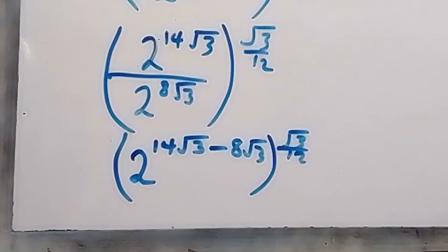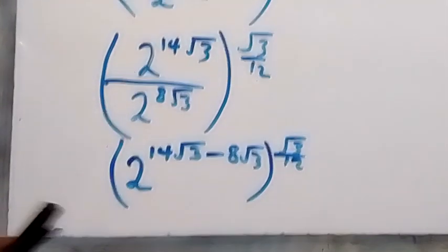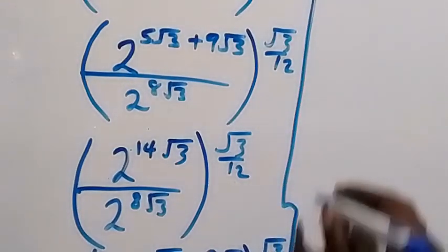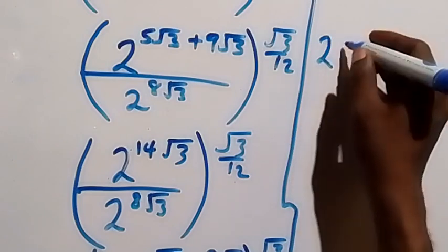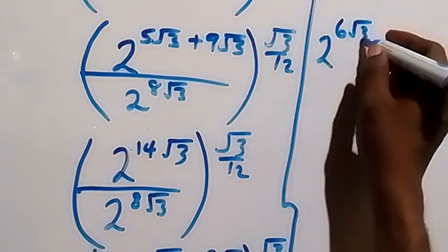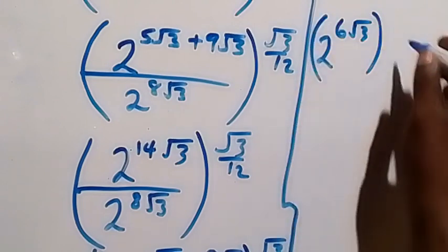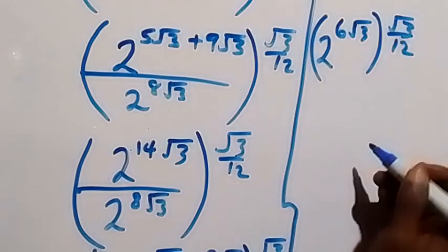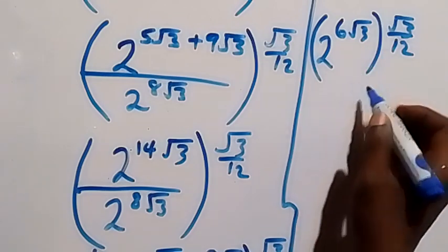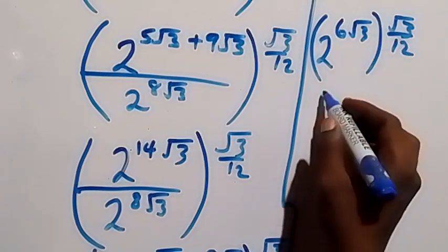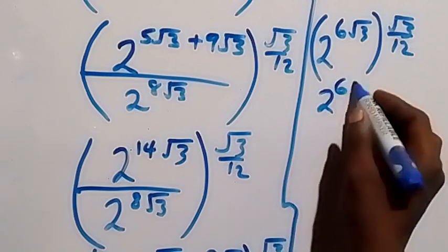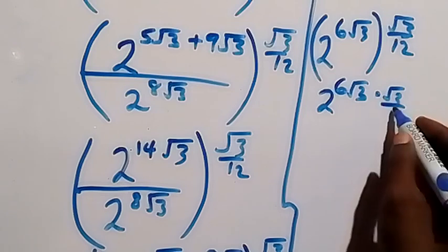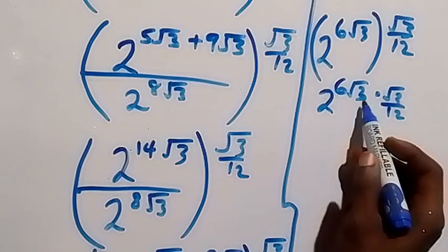So we have 2 raised to power 6 root 3, all raised to power root 3 over 12. Since this power also multiplies, we have 2 raised to power 6 root 3 multiplied by root 3 over 12.